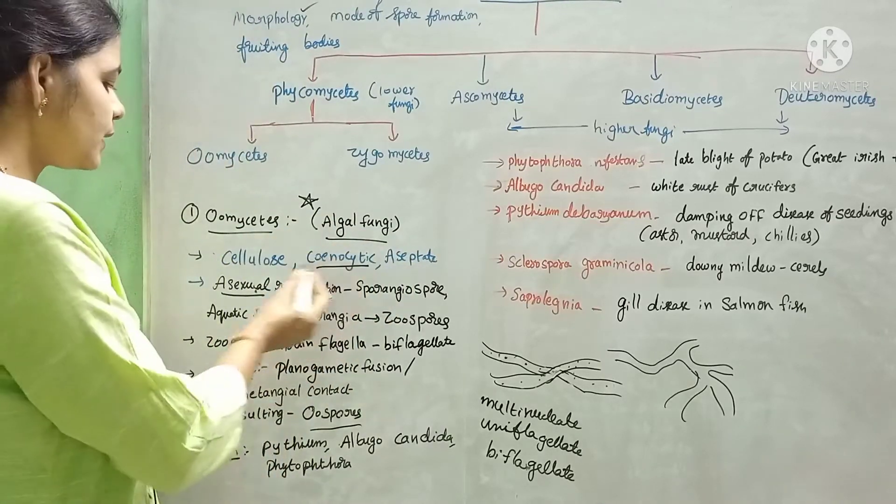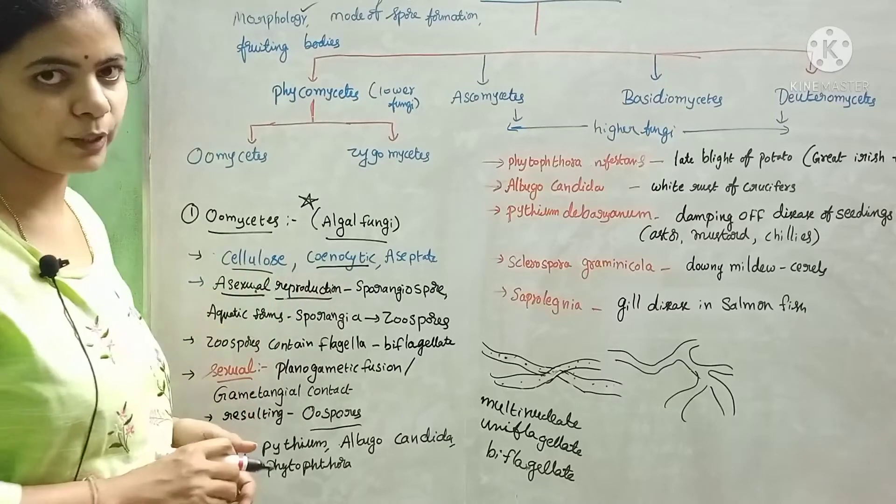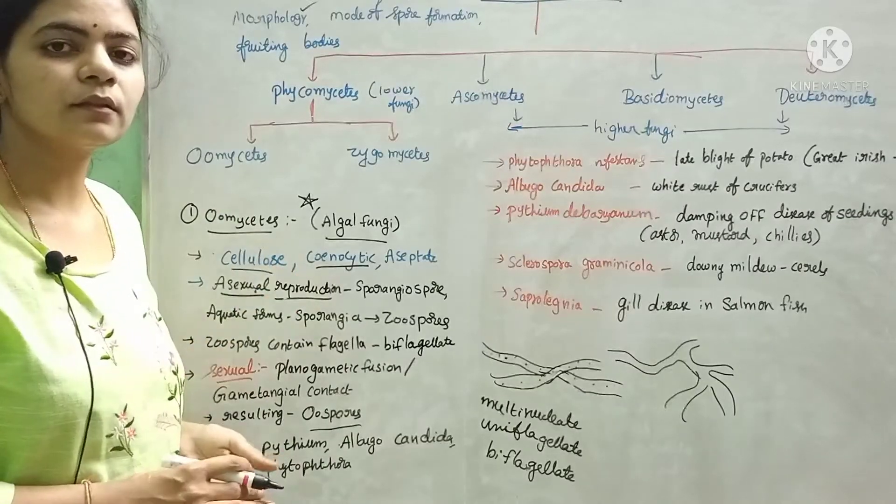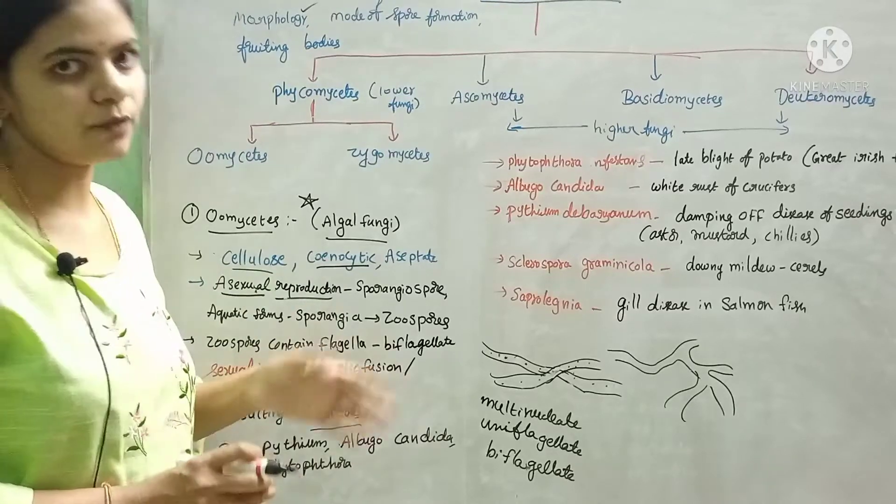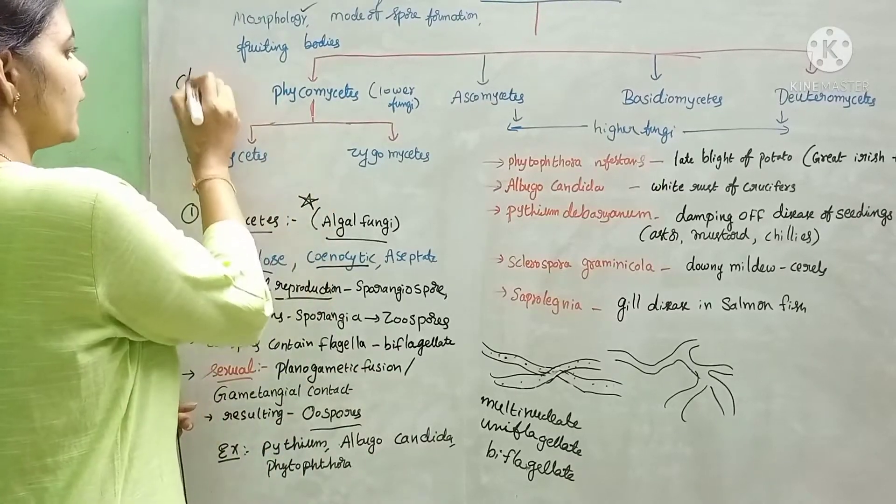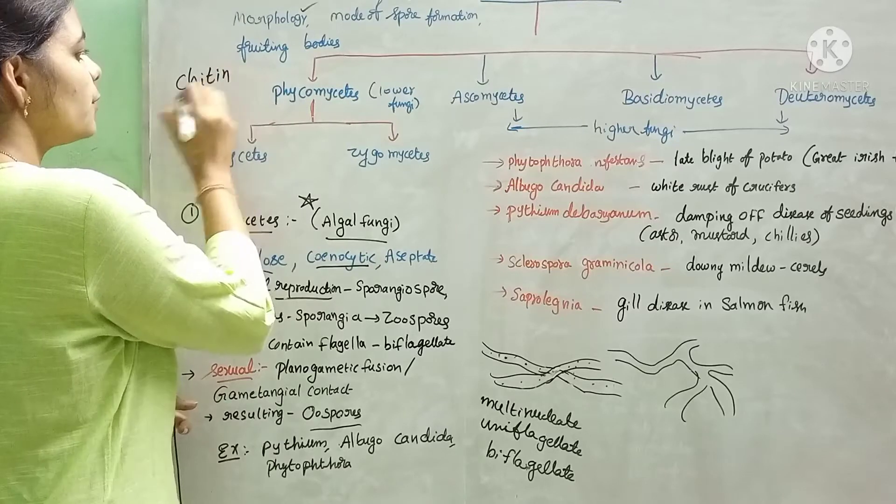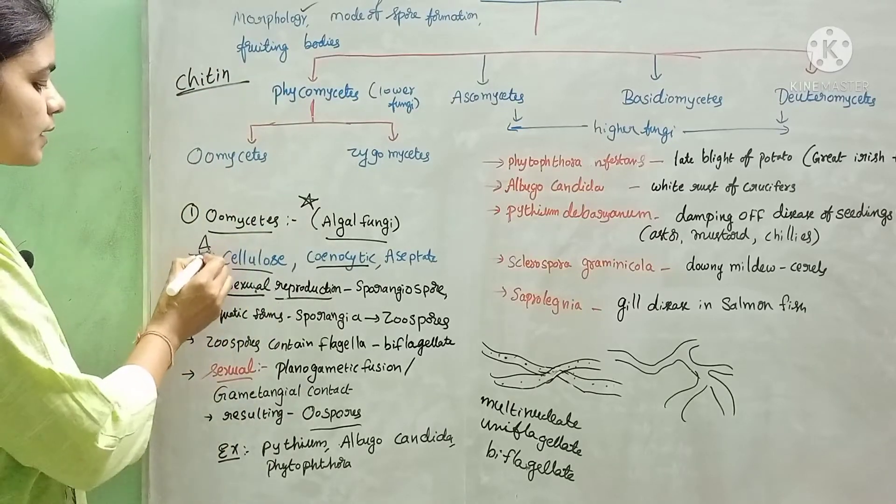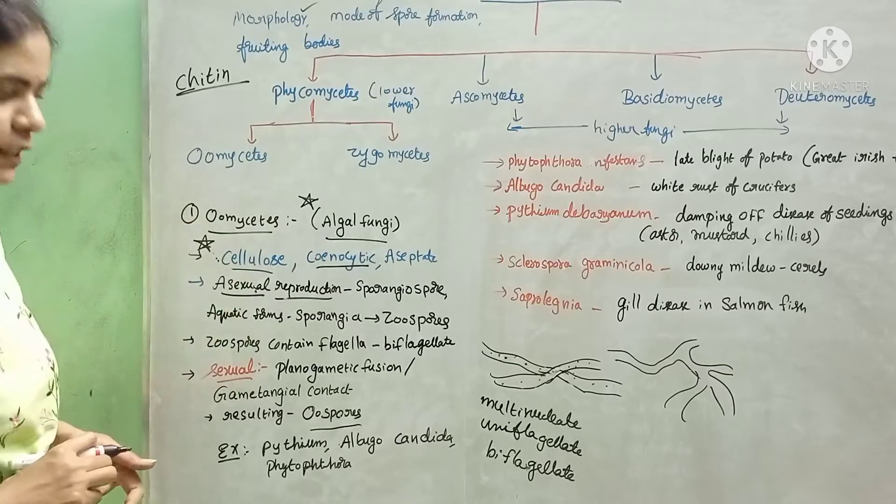Like algae, the cell wall is made up of cellulose. In all fungi, the cell wall is made up of chitin or fungal cellulose. But as an exception, in oomycetes, the cell wall is made up of cellulose.